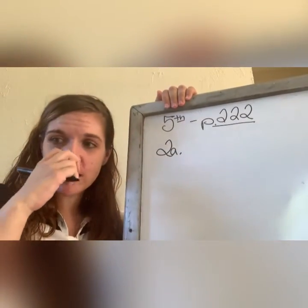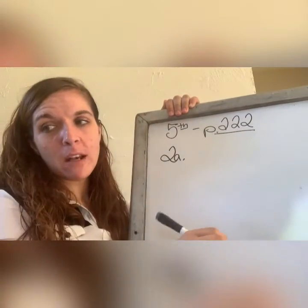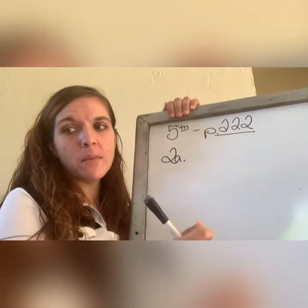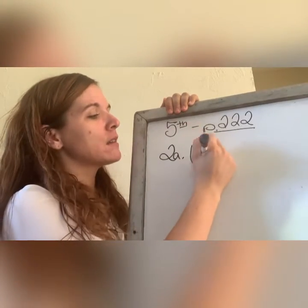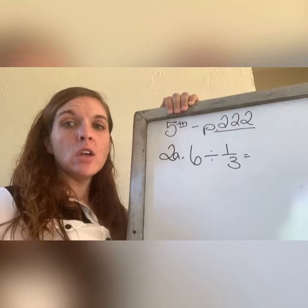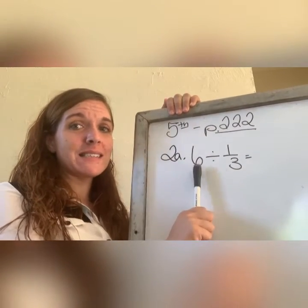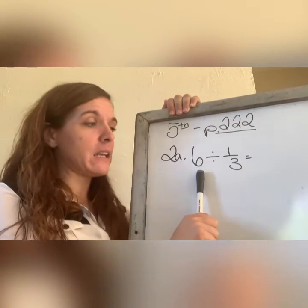Look at number two, letter a. We're skipping number one, so you can put a line through it. Six divided by one third. First of all, just like any kind of fraction, we can't multiply or divide when this six is there. The very first thing we need to do is...